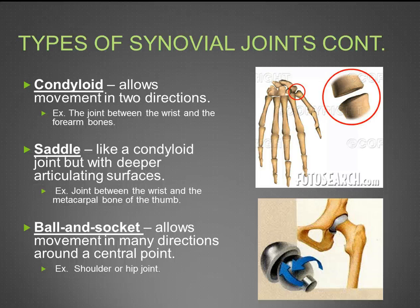Next is condyloid, which allows movement in two directions — for example, the joint between the wrist and the forearm bones. Next is the saddle joint, which is like a condyloid joint but with a much deeper articulating surface. For example, the joint between the wrist and the metacarpals, where the metacarpal bone of the thumb sits in the articular space of the wrist bones.